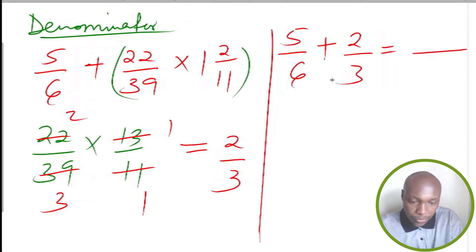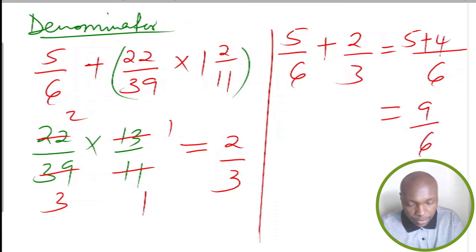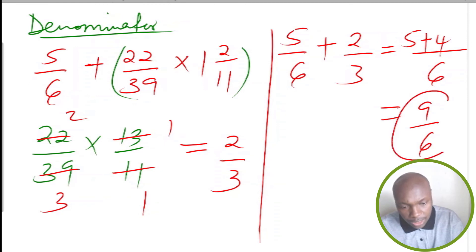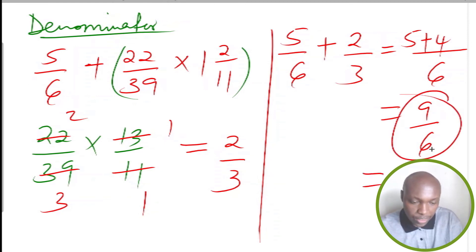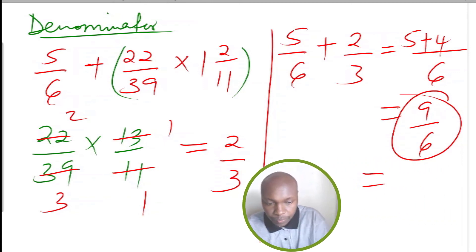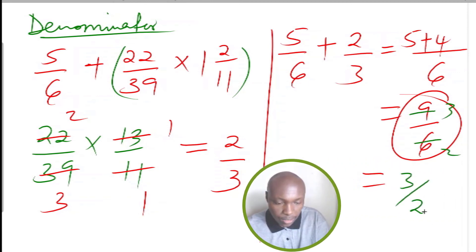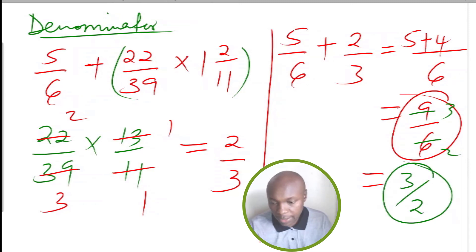Now we have 5 over 6 plus 2 over 3. Finding the LCM of 6 and 3 gives 6. 6 divided by 6 is 1, 1 times 5 is 5. Plus: 6 divided by 3 is 2, 2 multiplied by 2 is 4. This gives 9 over 6. Simplifying by 3: 9 divided by 3 is 3, 6 divided by 3 is 2. So the denominator simplifies to 3 over 2.